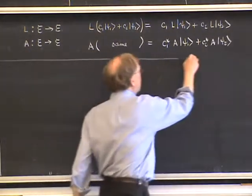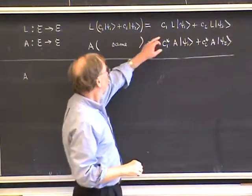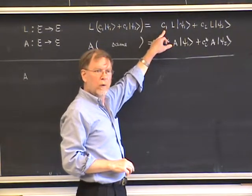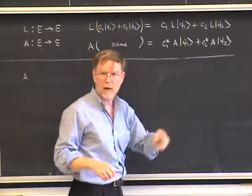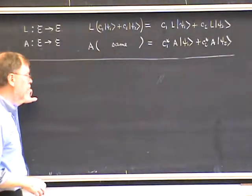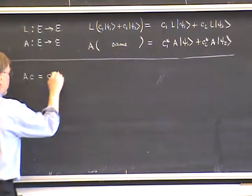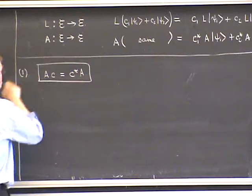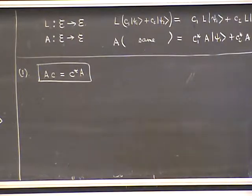One way of summarizing this is to say that an anti-linear operator does not commute with a c-number. When c is a complex number, viewed as a multiplicative operator, we have A · c = c* · A. I'll put a box around this because this is the first of the rules which apply to anti-linear operators that differ from the case of linear operators.